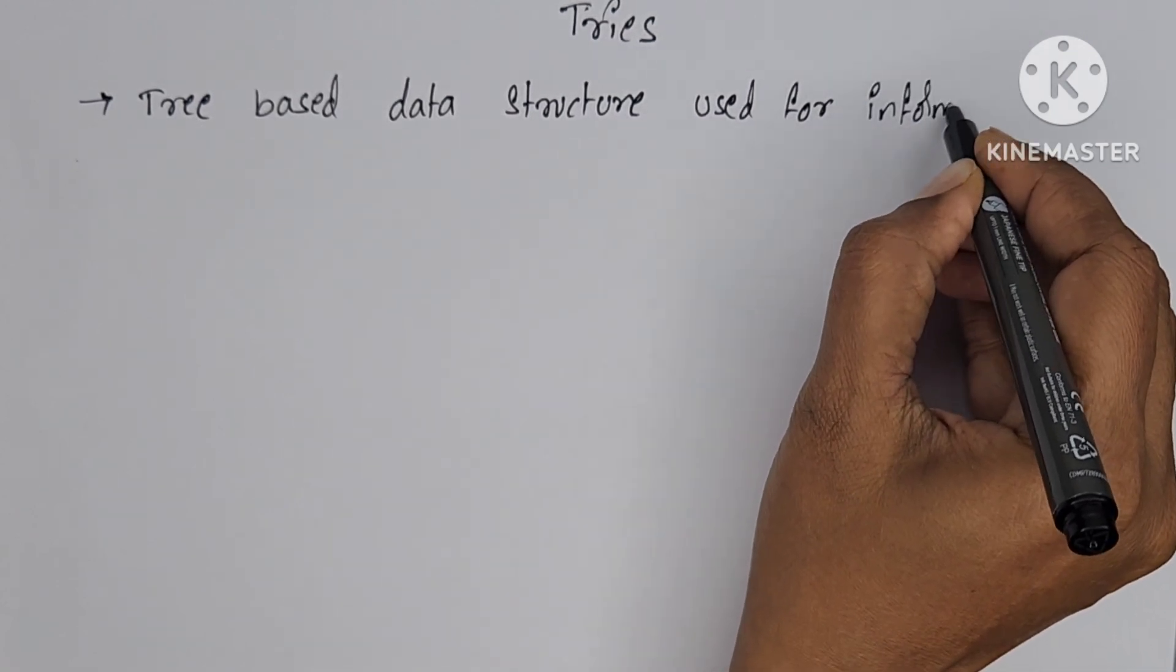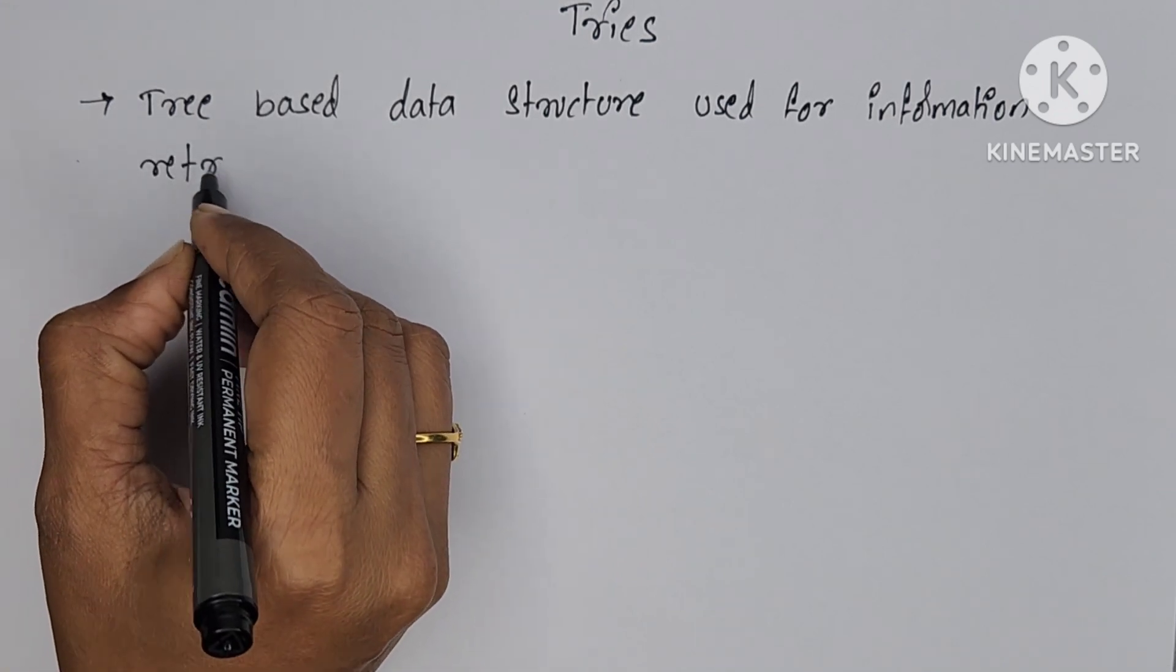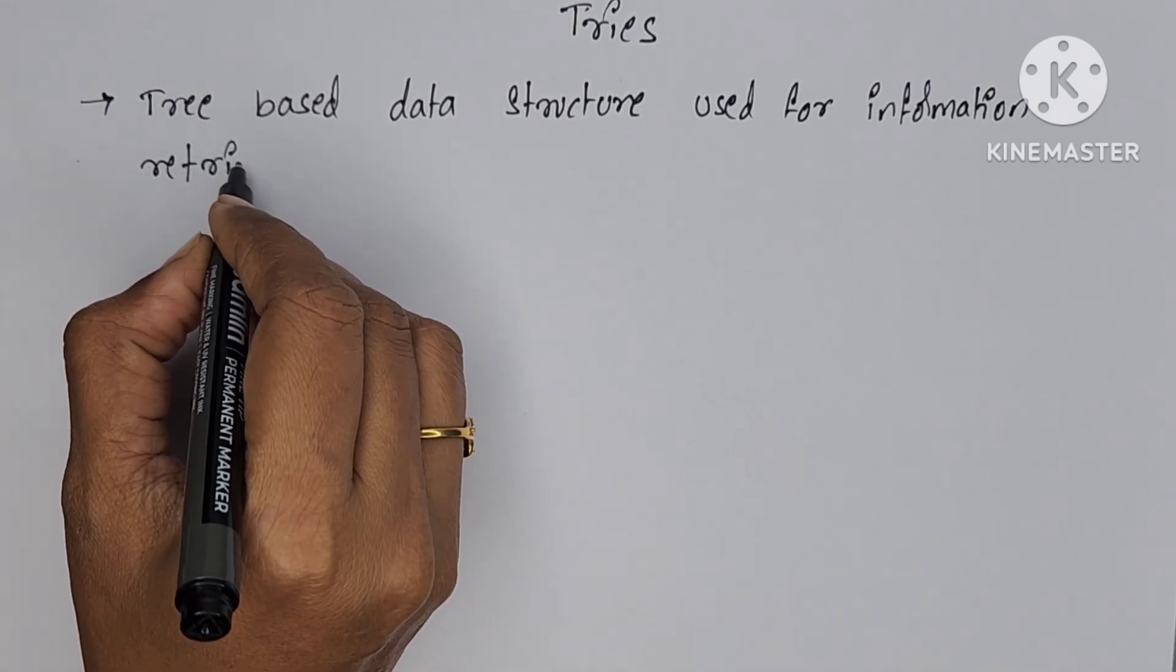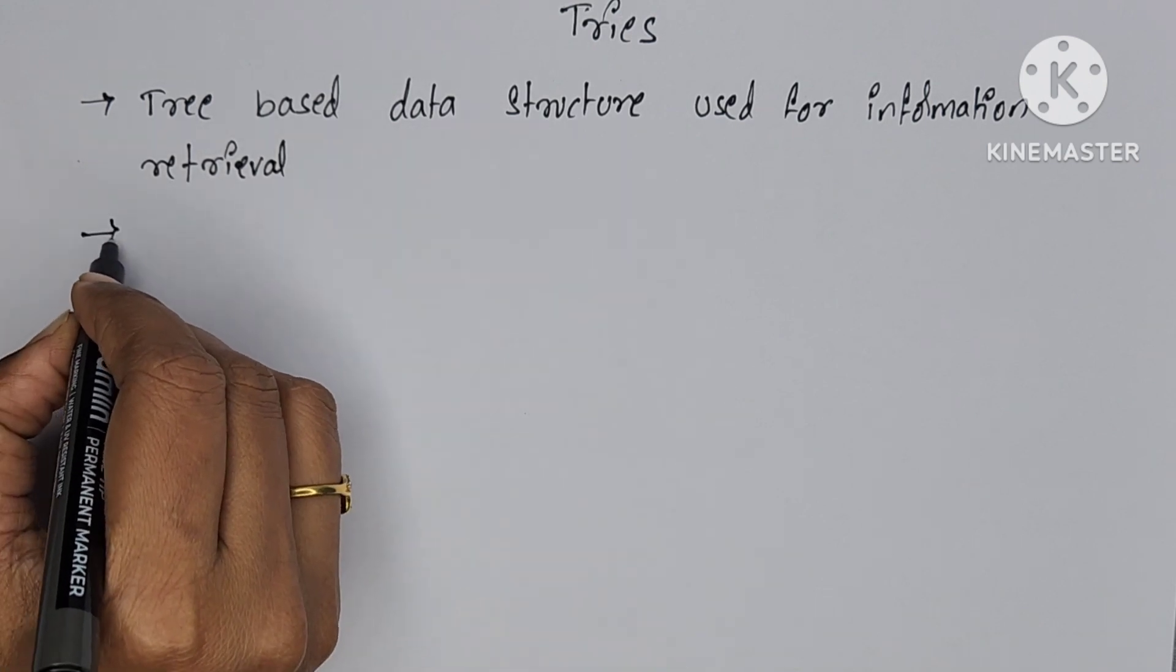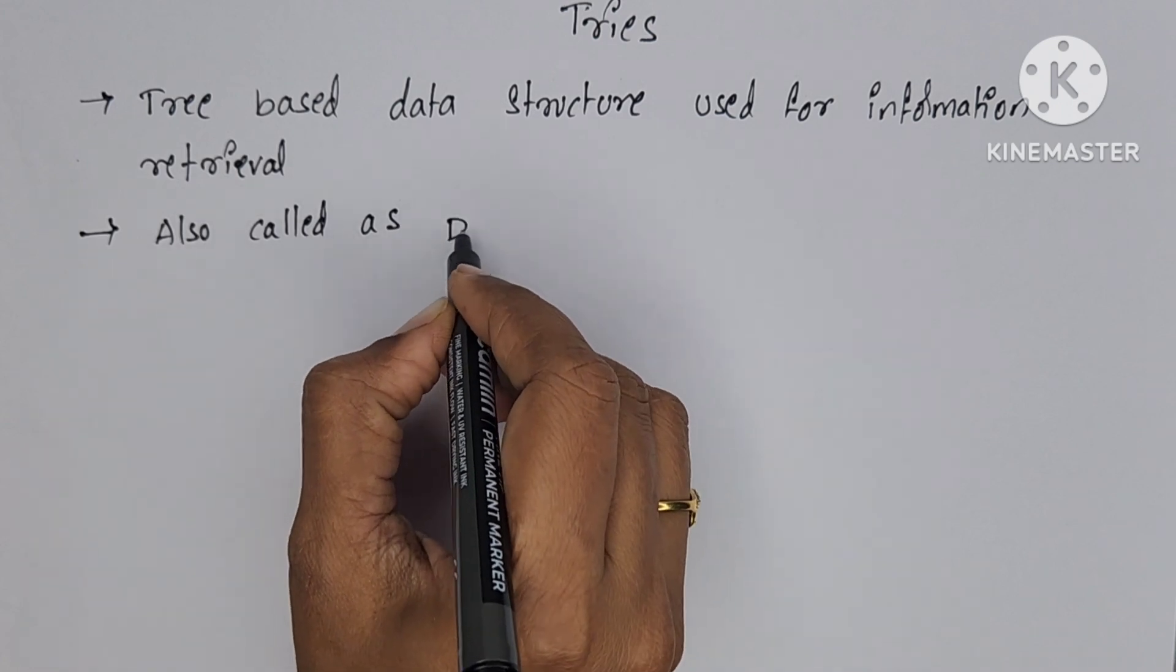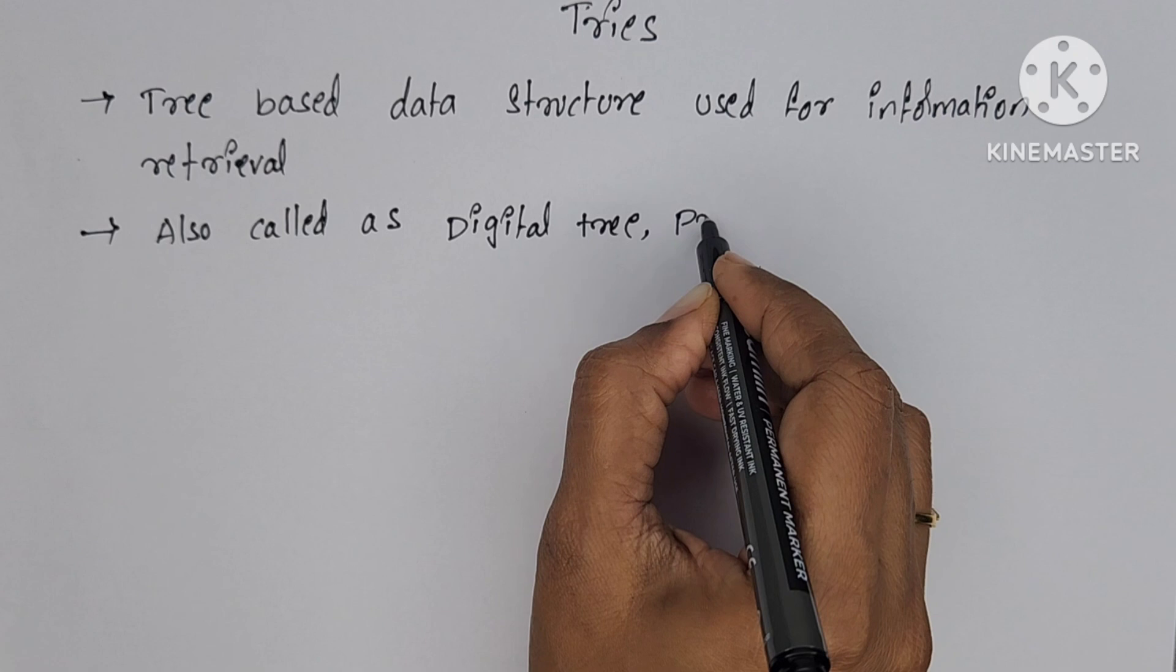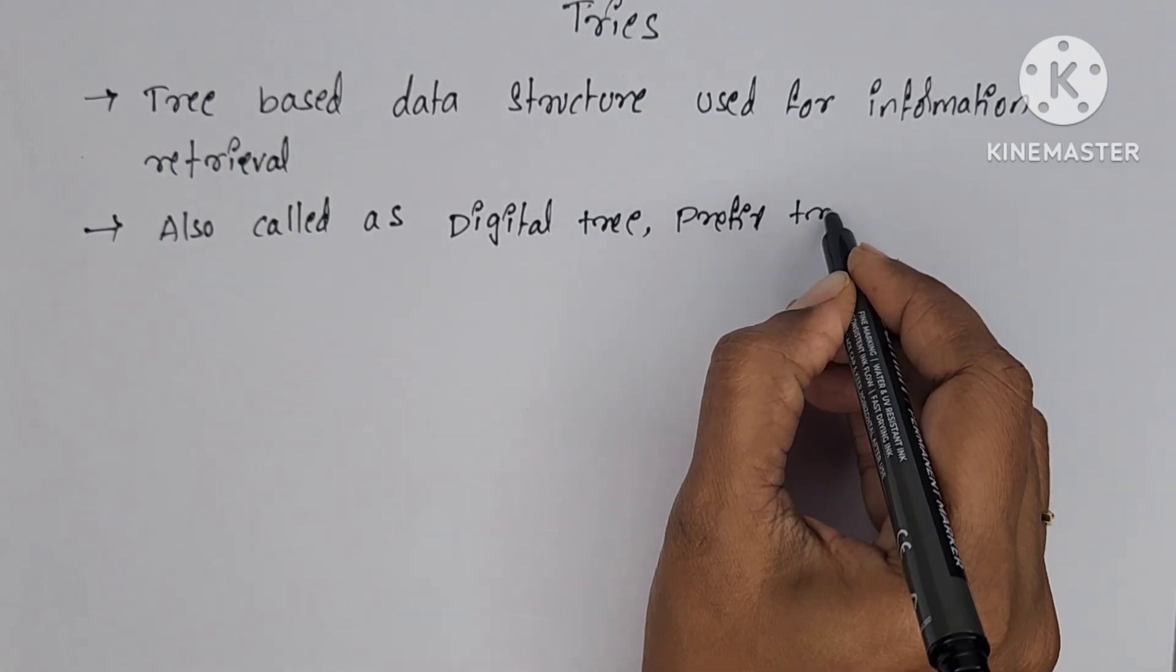Trie is derived from the word retrieval. It is a tree-based data structure used for information retrieval to store and retrieve strings. Tries are also called digital trie, prefix trie, and radix trie.